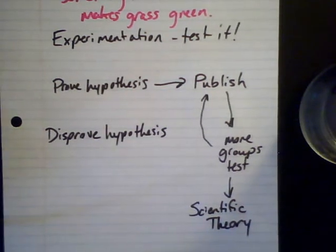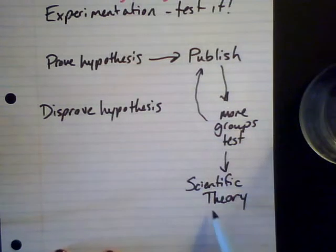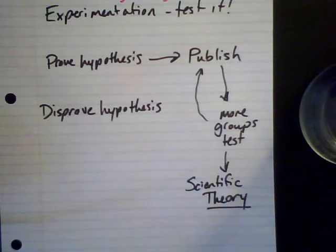The difference between a theory and a hypothesis is that a theory is something that has been thoroughly tested — it has gone through the method. If it hasn't gone through the method, then it is not a scientific theory.